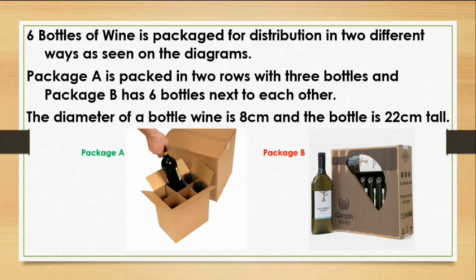Package A is packed in two rows with three bottles, and package B has six bottles next to each other. They tell us the diameter of the bottle is eight centimeters, and the bottle height is 22 centimeters long, as you can see here.